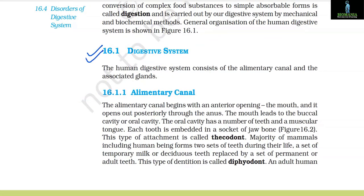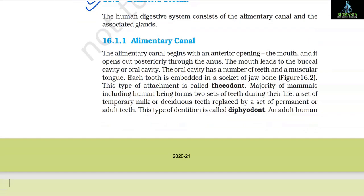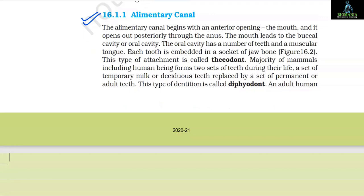16.1 Digestive System. The human digestive system consists of the alimentary canal and the associated glands. The alimentary canal begins with an anterior opening, the mouth, and it opens out posteriorly through the anus. The mouth leads to the buccal cavity or oral cavity. The oral cavity has a number of teeth and a muscular tongue.